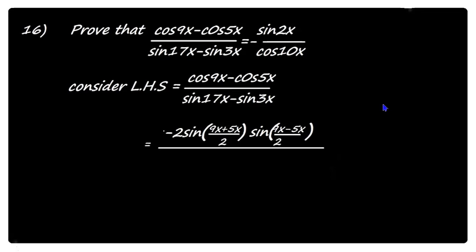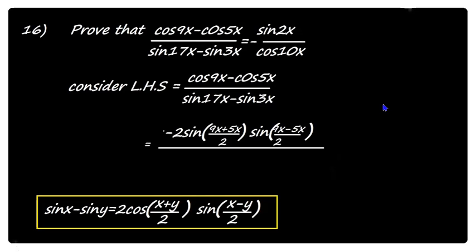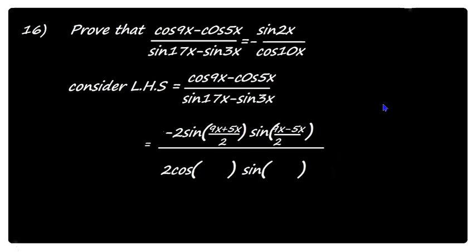Similarly, in the denominator, apply the sin x minus sin y formula. Sin x minus sin y equals 2 cos((x+y)/2) into sin((x-y)/2). Here x is 17x and y is 3x. Applying this formula in the denominator gives 2 cos((17x+3x)/2) into sin((17x-3x)/2).